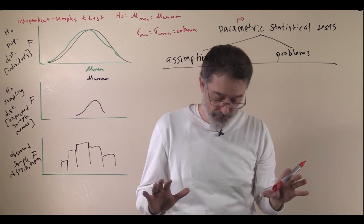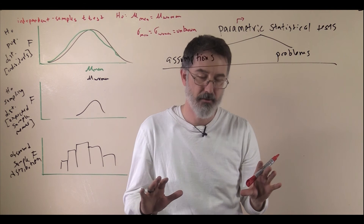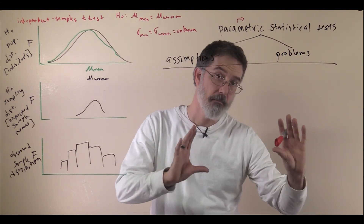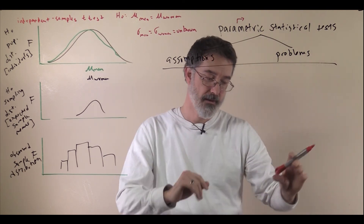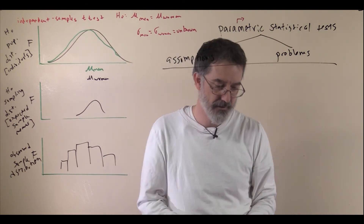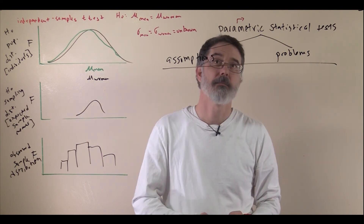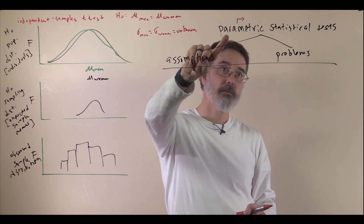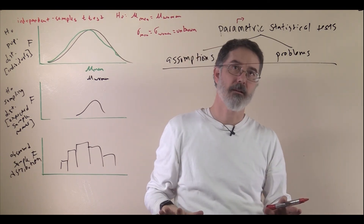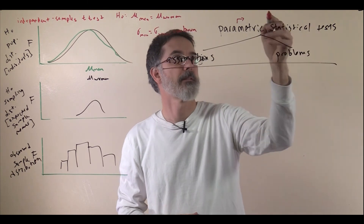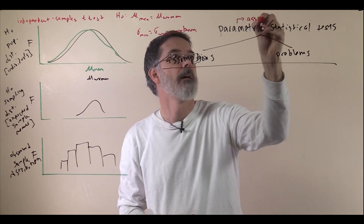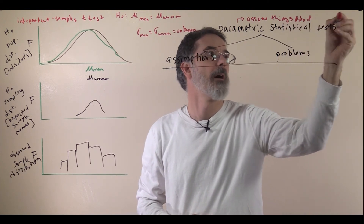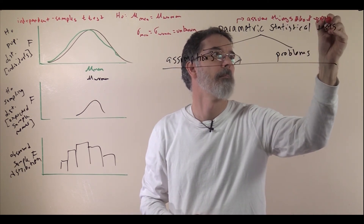Remember, a long time ago when we talked about descriptive statistics, we talked about parameters being descriptive statistics for populations, like mu and sigma — the population mean and standard deviation — and sample statistics, which are your sample mean and standard deviation. The population parameters are assumed by all the tests we have talked about so far. These parametric statistical tests assume things about populations.